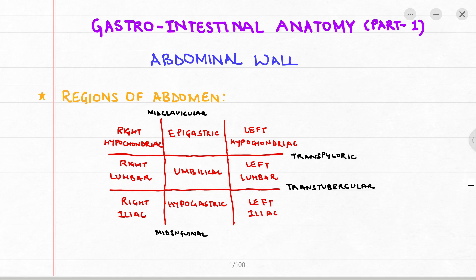This is the first part of gastrointestinal anatomy. We start with the abdominal wall, and now the regions of the abdomen.